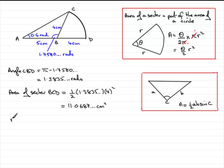So, we can get the area of the triangle, area of triangle ABC. It's going to be equal to a half, multiplied by the 5 and the 4, so 5 times 4, times the sine of the included angle, which is the 1.7580 and so on radians.